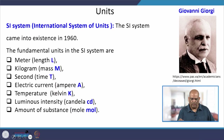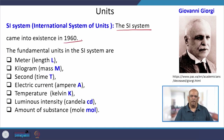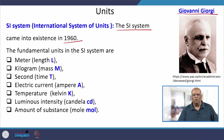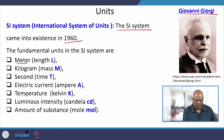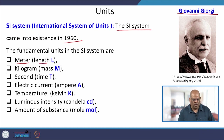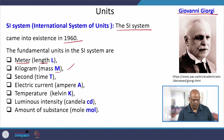We now move to the SI system — the International System of Units. This SI system came into existence in 1960, and again the credit goes to Giovanni Giorgi. The fundamental units in the SI system are: meter, with dimension L for length; kilogram, denoting mass with dimension M; and second, denoting time with dimension T.